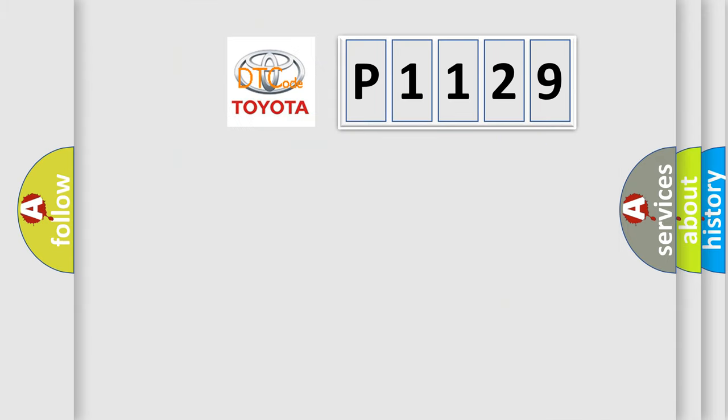We now know how the diagnostic tool translates received information into a more comprehensible format. The number itself does not make sense if we cannot assign meaning to what it actually expresses. So, what does the diagnostic trouble code P1129 interpret specifically for Toyota car manufacturers?